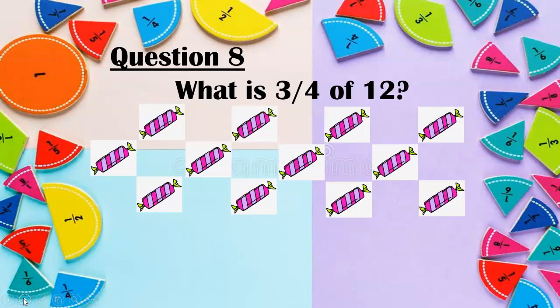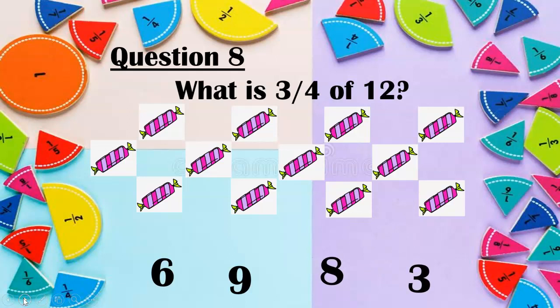Question eight — tricky one. What is three quarters of twelve? We need to work out one quarter and then three lots of that. Is it six? Is it nine? Is it eight? Or is it three? Don't forget to pause the video and work out one quarter first — how many fours go into twelve? Then do three lots of that. Not six, not eight, not three — it's nine. There are three fours in twelve, so one quarter is three. Then three add three add three equals nine.